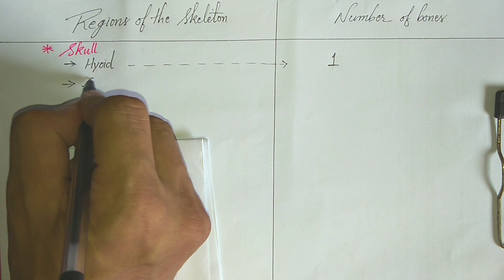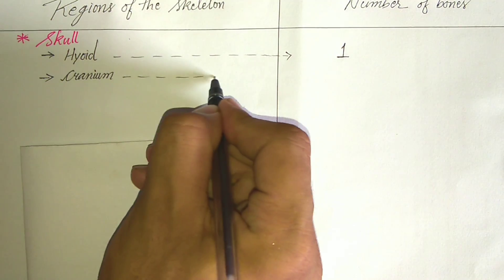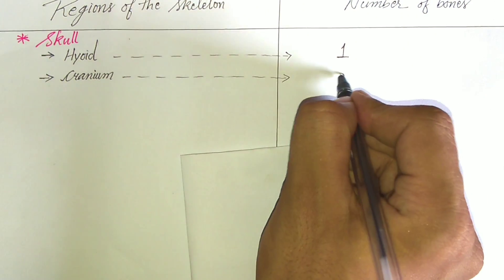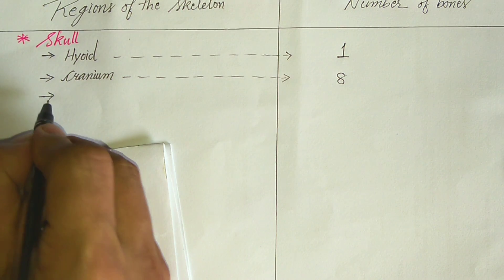Second, in same skull region of a skeleton, the cranium bone is present, which is eight in number, four on each side.